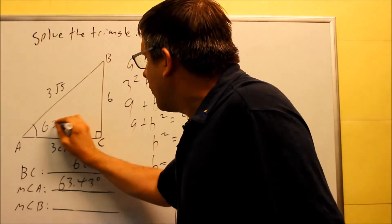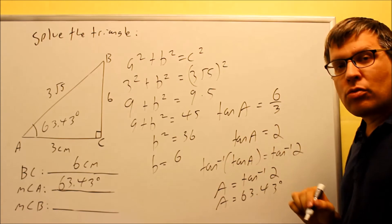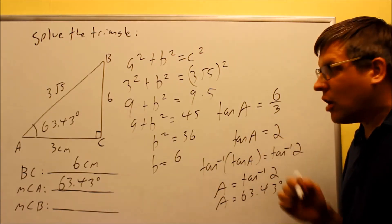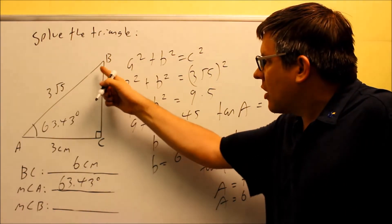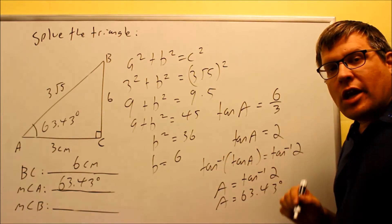So what I have now is I have a situation where I have two out of the three angles given in the triangle, I found that one. So now the last thing I want to find is measurement angle B.